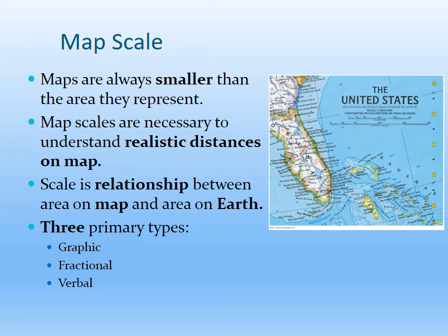The problem with graphic and verbal scales is that you are confined to the unit of measurement they use. What a fractional scale does is tell you in any unit you want what that relationship is from the map to the real world. For example, this map has a representative fractional scale of 1:7,920,000. That means 1 inch on this map equals 7,920,000 inches in the real world, and likewise 1 centimeter equals 7,920,000 centimeters. You can insert any unit you want, making it very user-friendly for geographers.